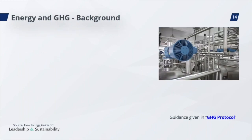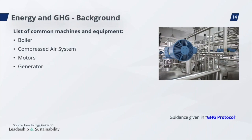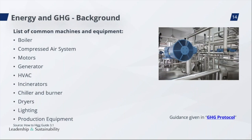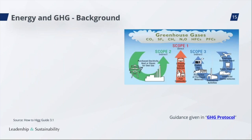Taking a closer look at your facility, here are some of the common machines and equipment which use energy: boiler, compressed air system, motors, generators, HVAC (heat, ventilation, and air conditioning devices), incinerators, chillers, burners, dryers, lighting, and production equipment. As a consequence, your factory's energy use generates direct and indirect greenhouse gas emissions. These emissions are divided into three different scopes according to the Greenhouse Gas Protocol. Scope 1 covers all direct greenhouse gas emissions, for example from fuels used in boilers.